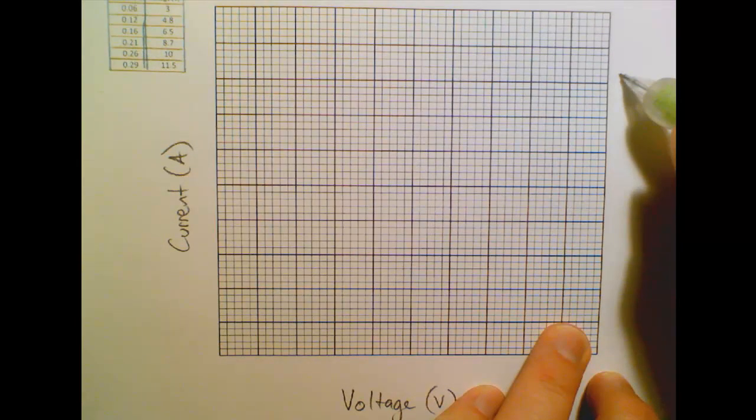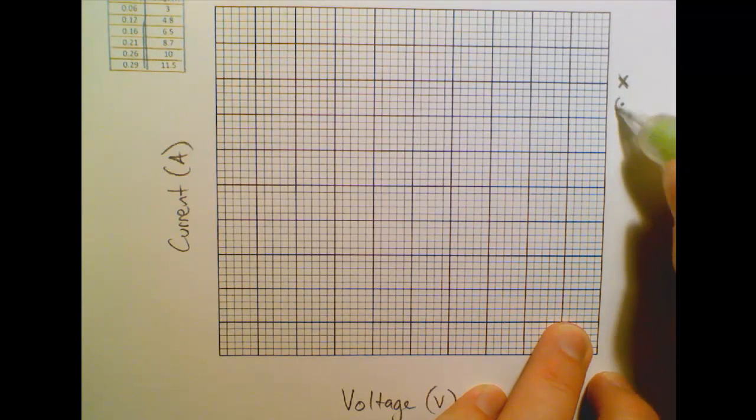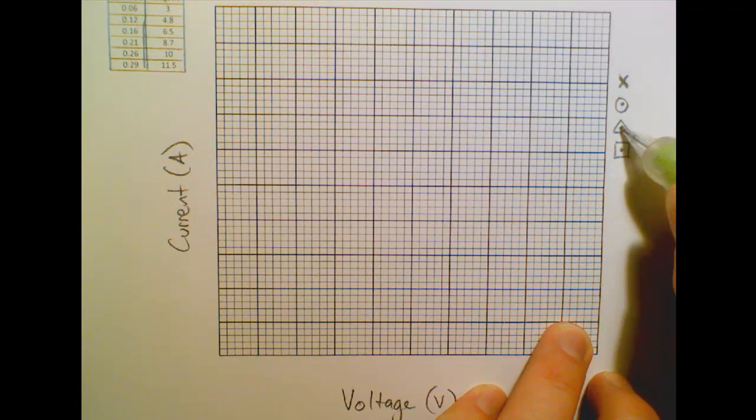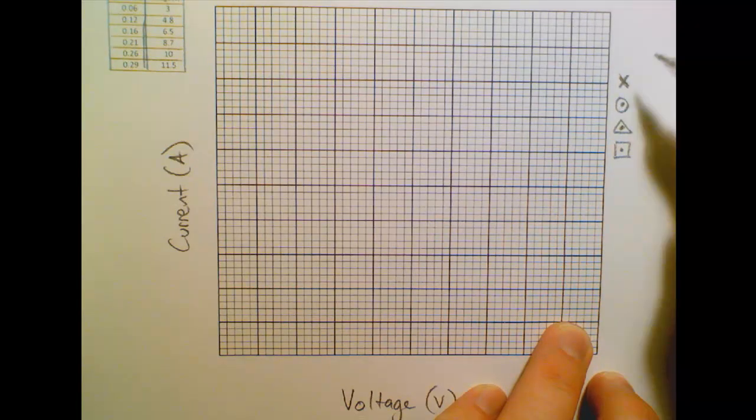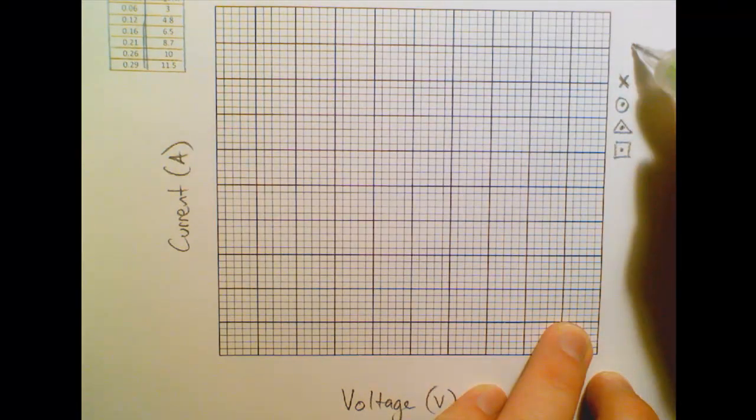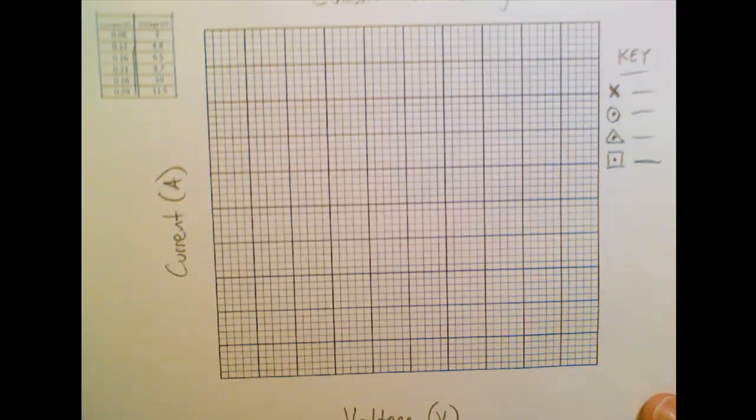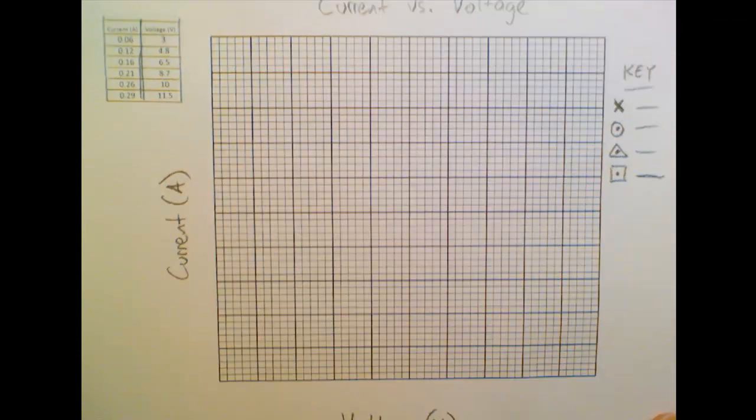So now let's have a go at plotting our graph. And remember that when we plot points on a graph, you need to use proper markers for the points, like a cross, or a dot with a circle, or a dot with a triangle, or a dot with a square, something like that. So I've just drawn a couple of examples there. And if I was plotting multiple sets of data on this graph, I would need a key. And then I would need to write next to what markers I used what each set of data is.